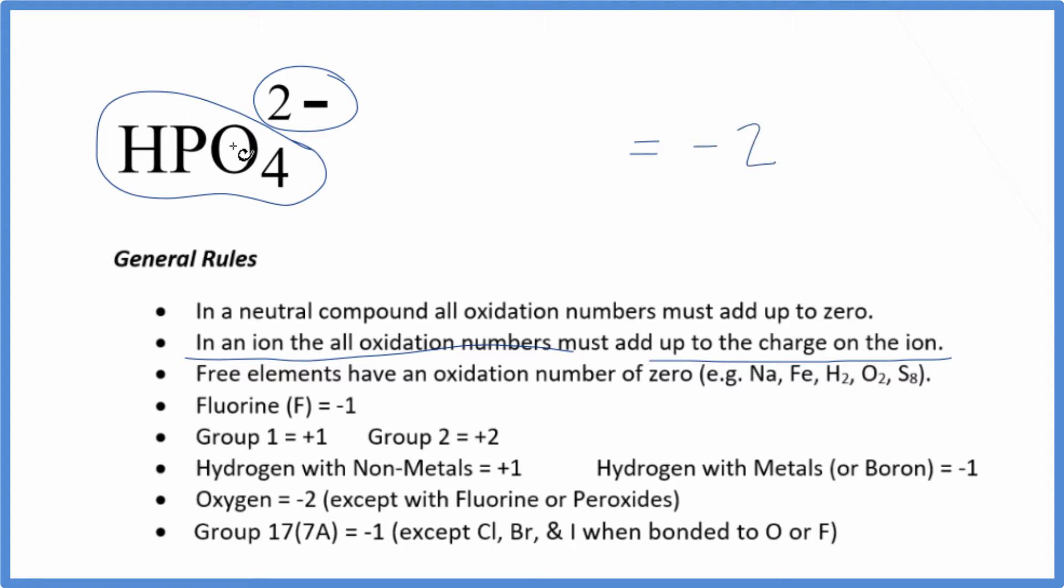We know hydrogen, when it's bonded to a non-metal like phosphorus, has a plus 1. And we don't know the phosphorus, but we do know that oxygen is almost always minus 2, with a few exceptions.